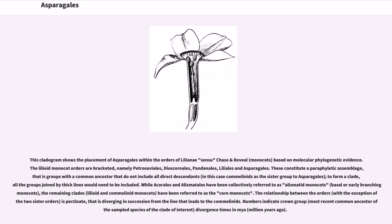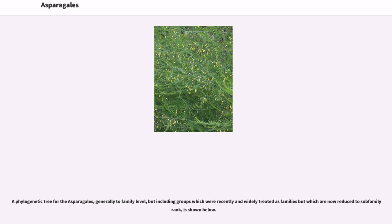These constitute a paraphyletic assemblage — groups with a common ancestor that do not include all direct descendants. In this case, the commelinids are the sister group to Asparagales. While Acorales and Alismatales have been collectively referred to as basal or early branching monocots, the remaining clades — lilioid and commelinid monocots — have been referred to as the core monocots. The relationship between the orders is pectinate, that is diverging in succession from the line that leads to the commelinids. Numbers indicate crown group divergence times in millions of years ago. A phylogenetic tree for the Asparagales, generally to family level, is shown, including groups recently treated as families but now reduced to sub-family rank.